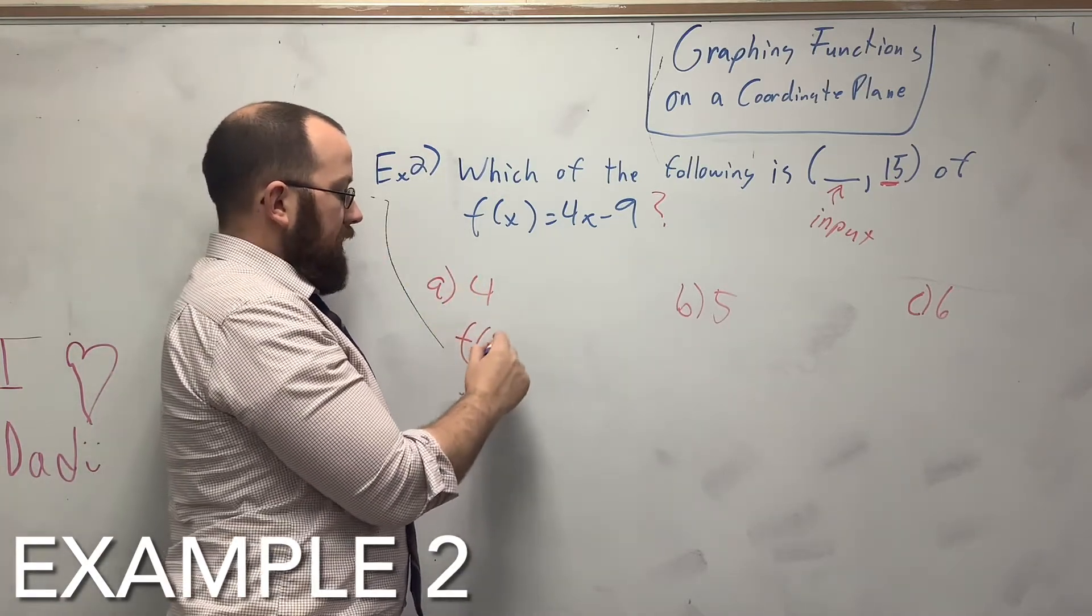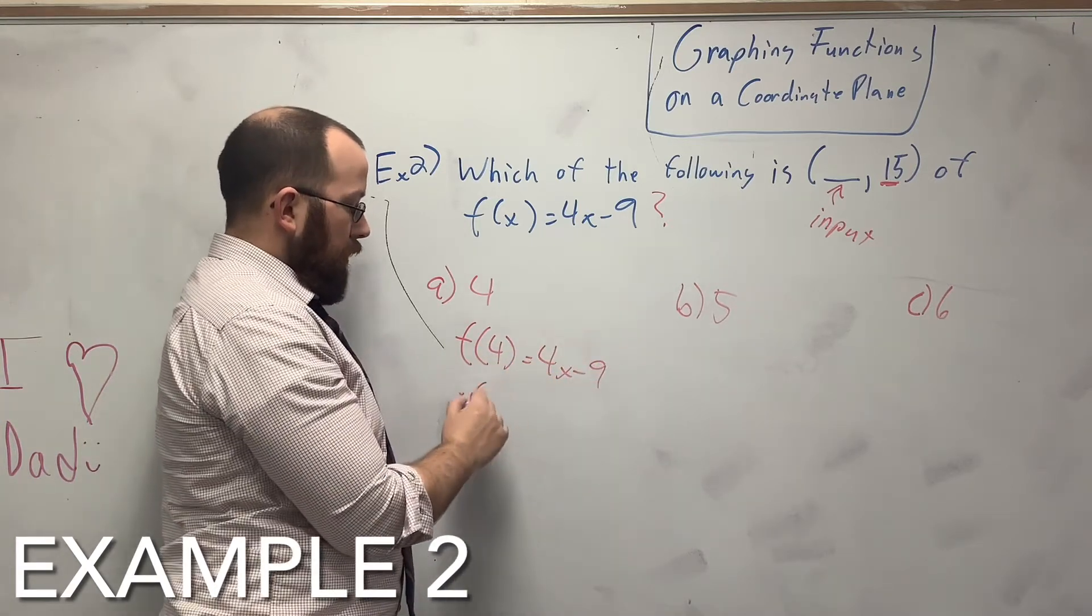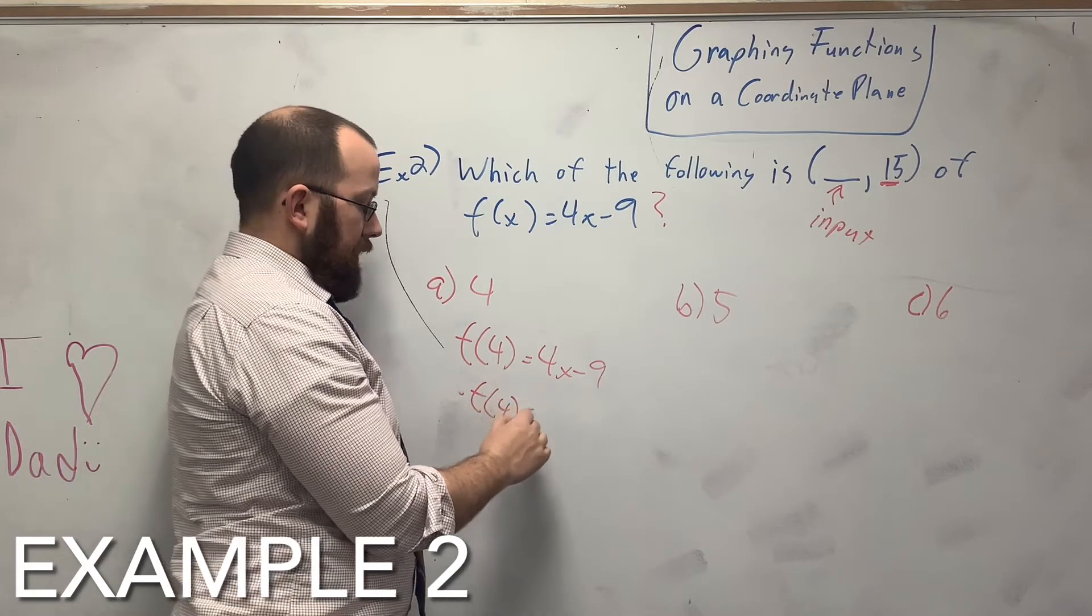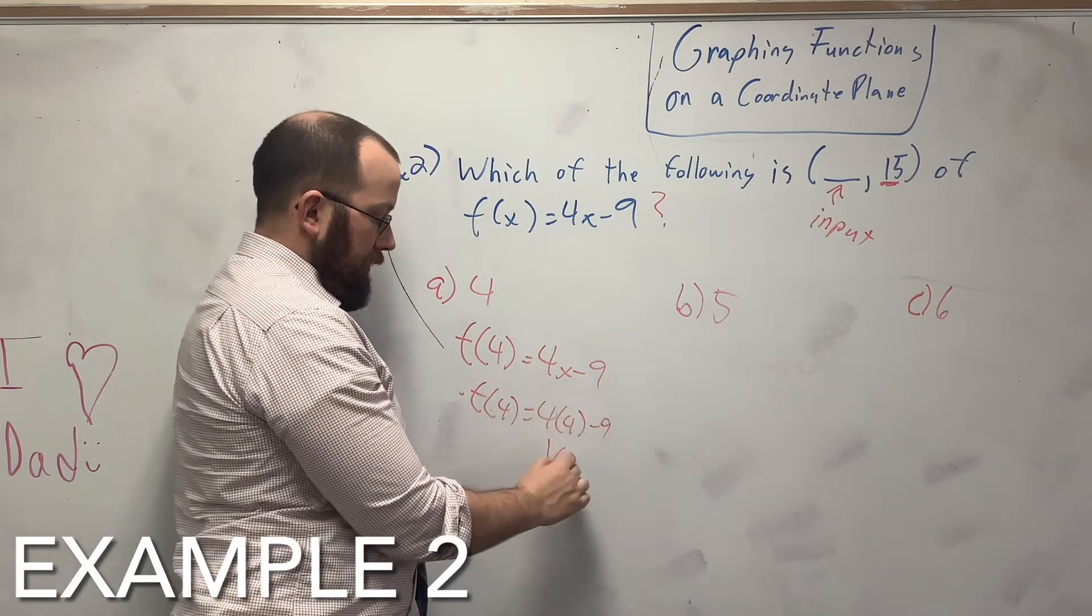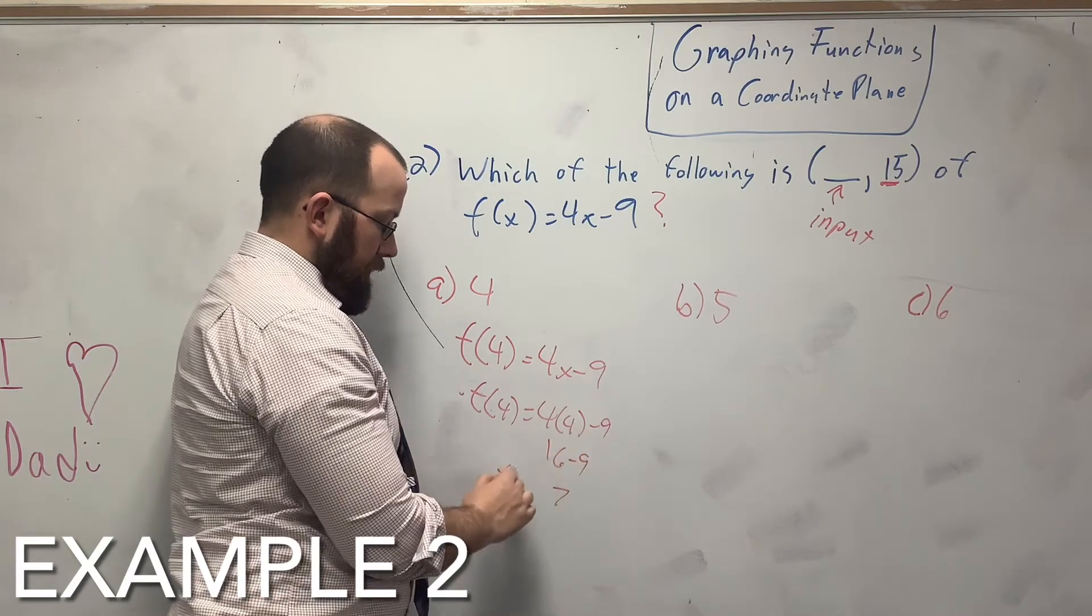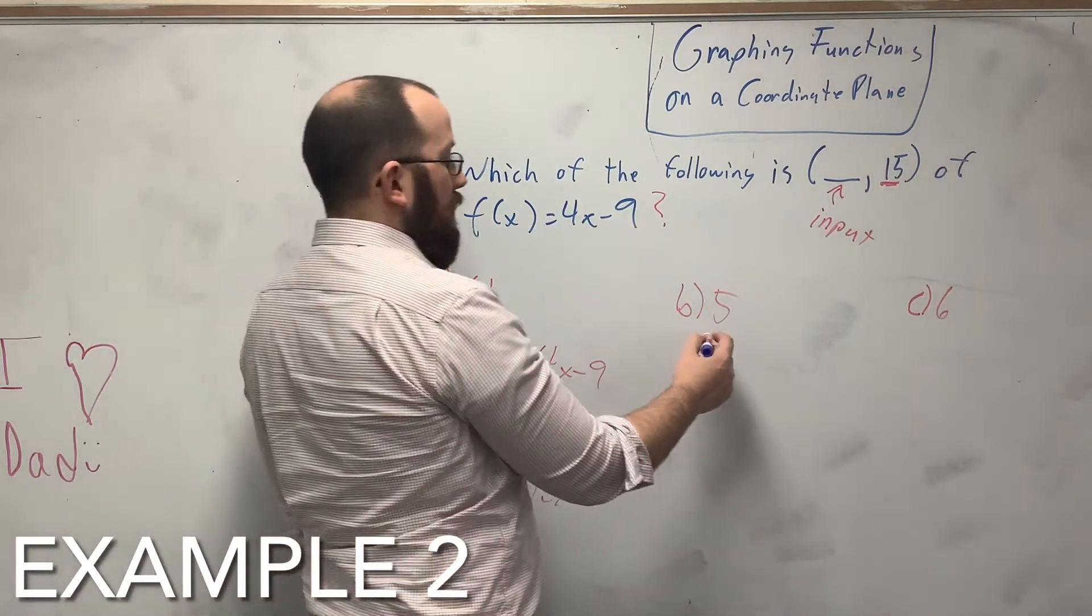So it's saying f of 4 equals 4x minus 9. So I'm plugging 4 everywhere I see x. So is that the answer? No, it is not.